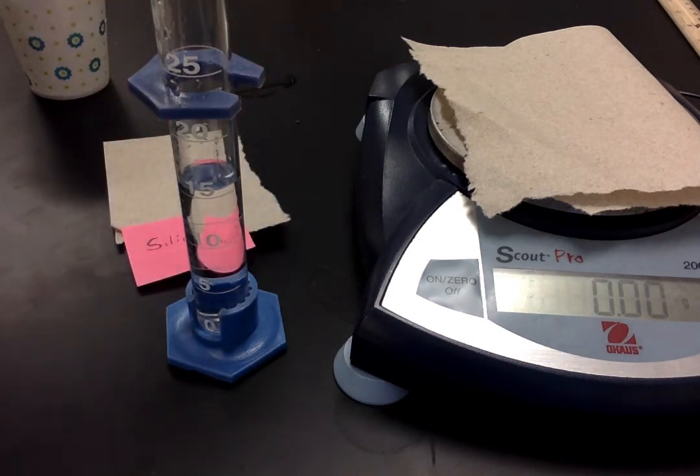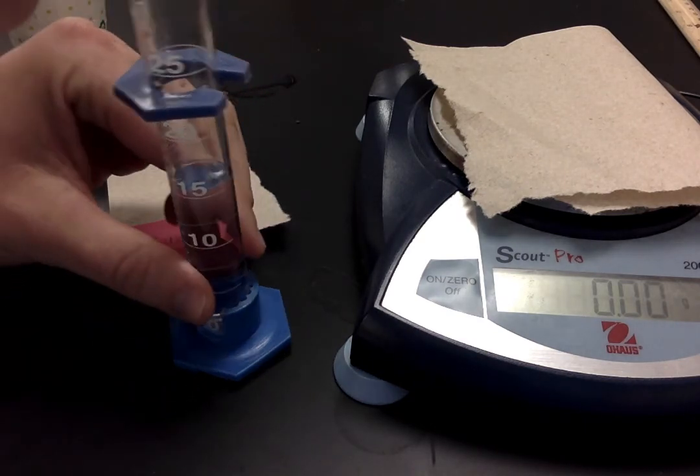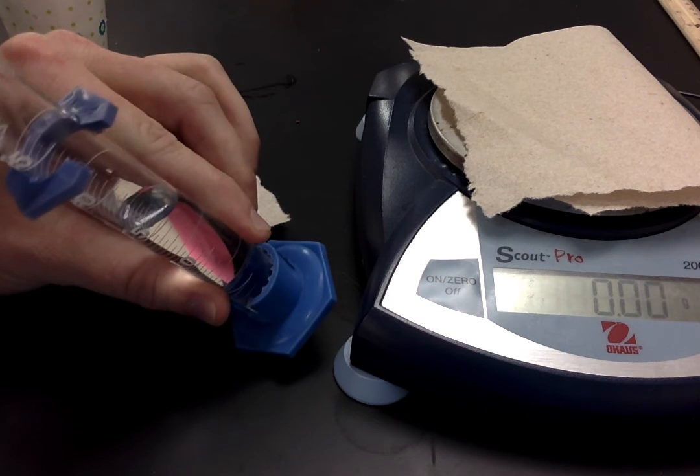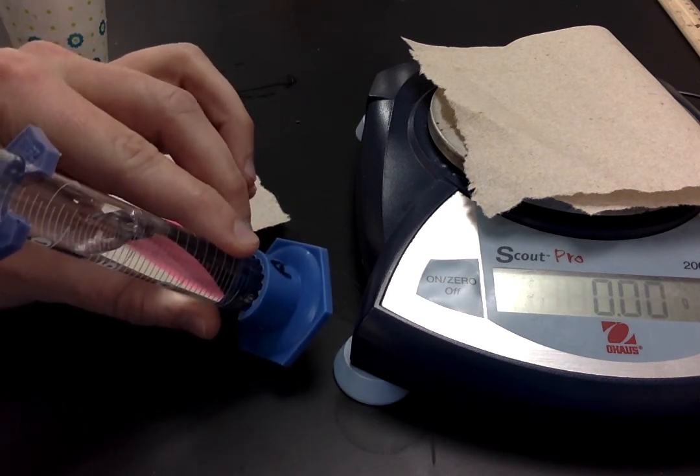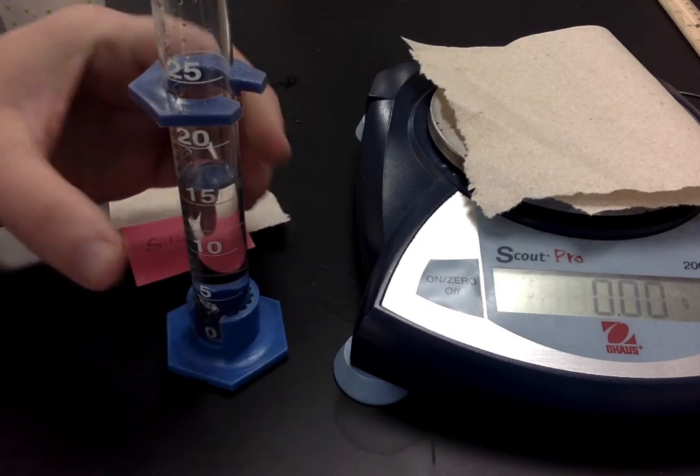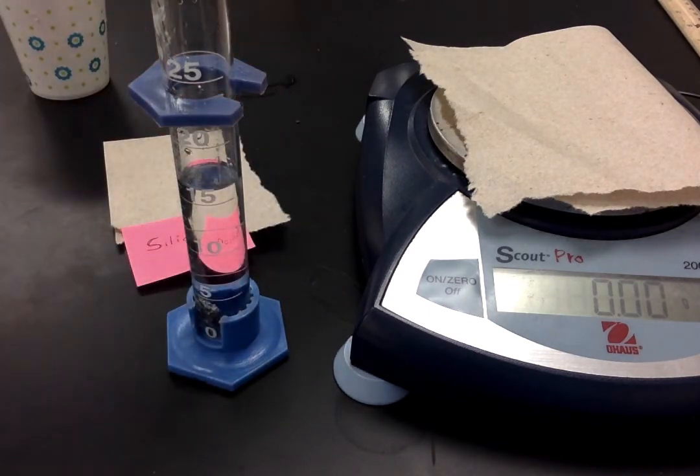Okay, so now I'm going to take that silicon. I'm going to gently put it in the graduated cylinder. Oh, you want to do it gently so that it doesn't make too many bubbles because that will affect your measurement.